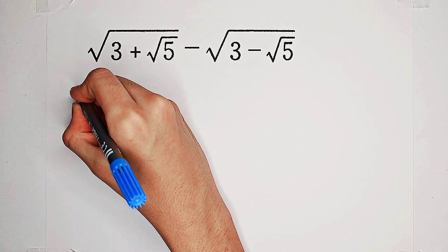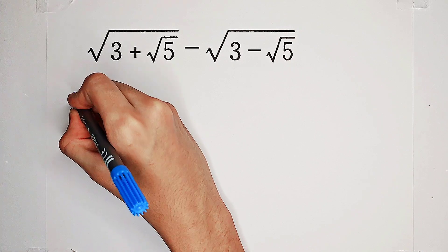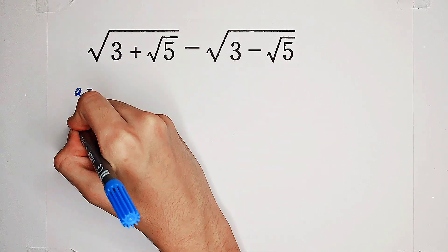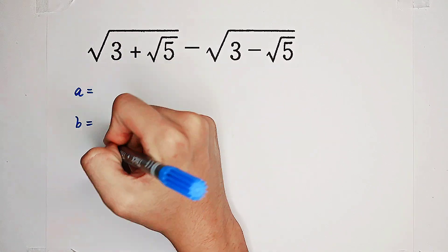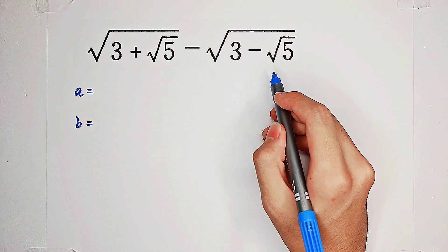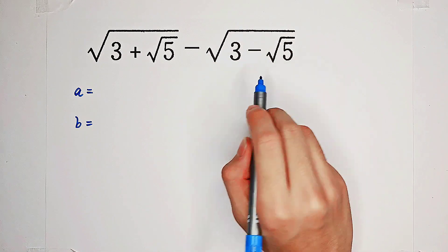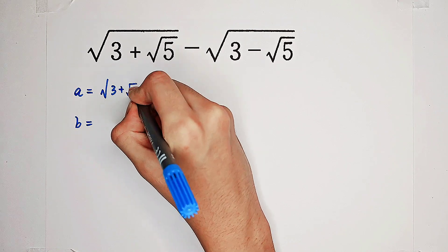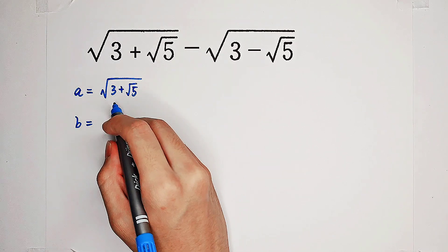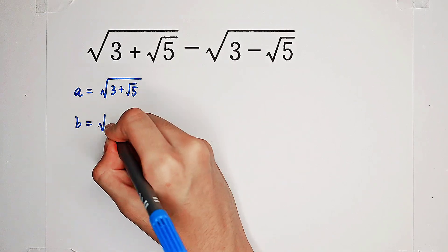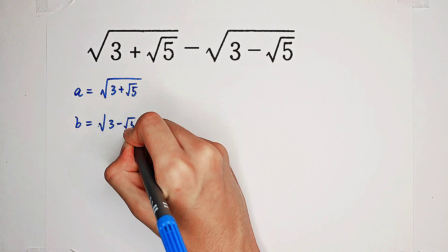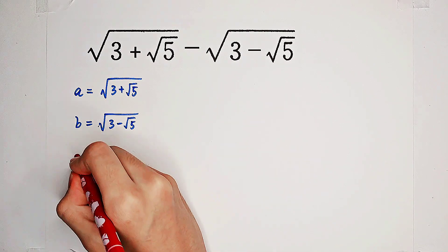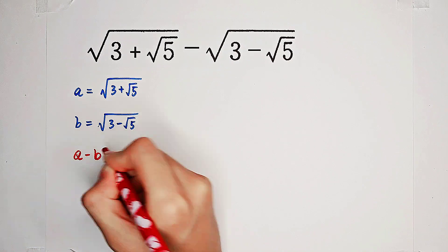Firstly, I'm going to substitute. I substitute a as this guy, and b as this one. So a is square root of 3 plus square root of 5, b is square root of 3 minus square root of 5. And what we're looking for is a minus b.